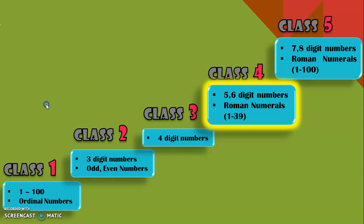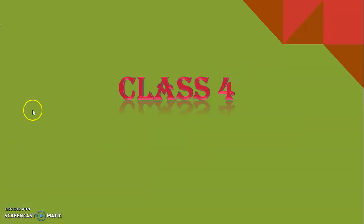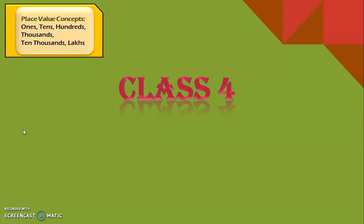Now let us take a detailed look at the learning outcome with respect to class four under the concept of numbers. The first topic we will be seeing is the place value concepts. In class four we will be dealing with ones place, tens place, hundreds place, thousands place, ten thousands place, and lakhs place. As I told you, we will be dealing with five and six digit numbers, taking a detailed look at the place values ten thousand and lakhs.